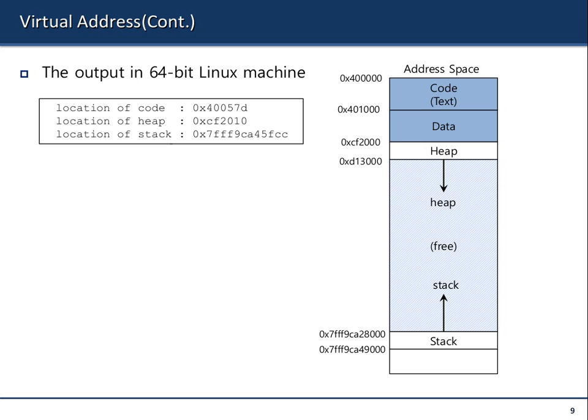This is the output of the previous code. The stack is at the high end, then you have the data in between, and the code at the lower end. Whenever you see running programs, you should always imagine their address space looks like this.